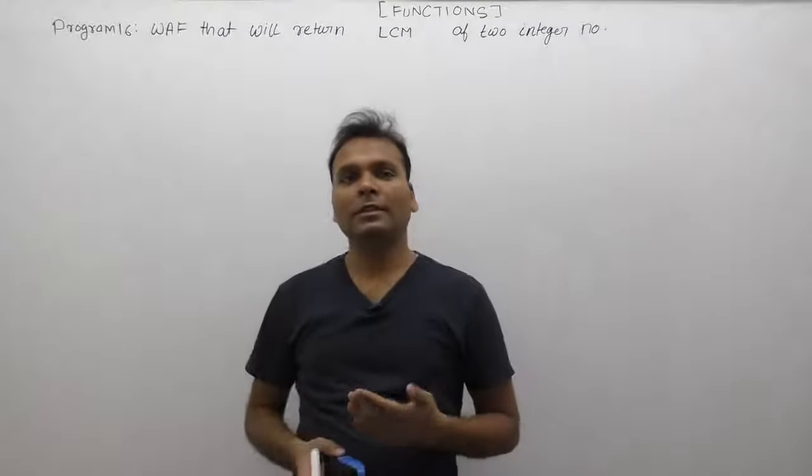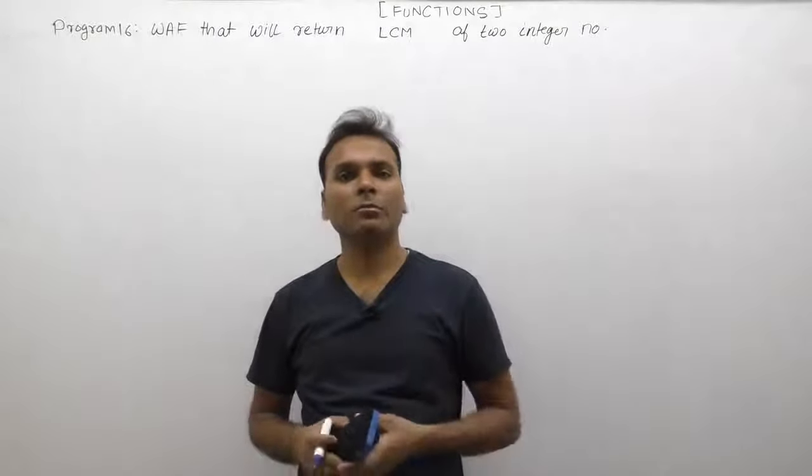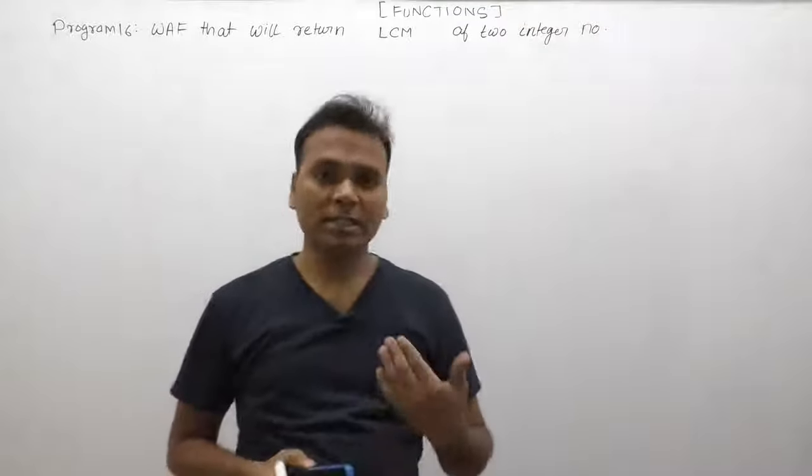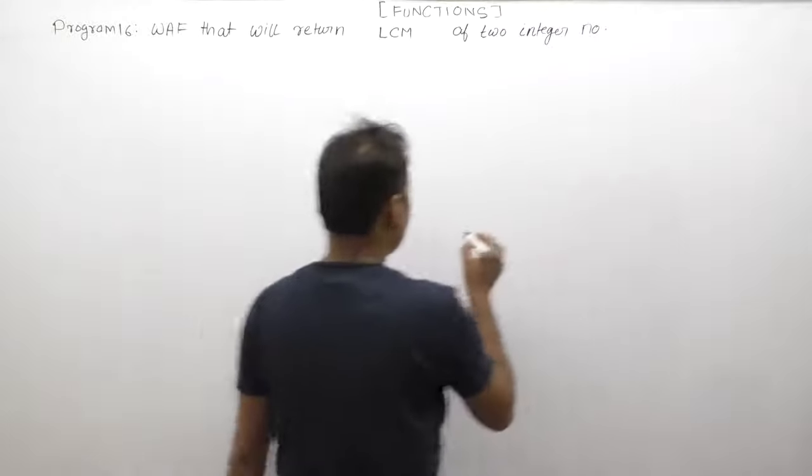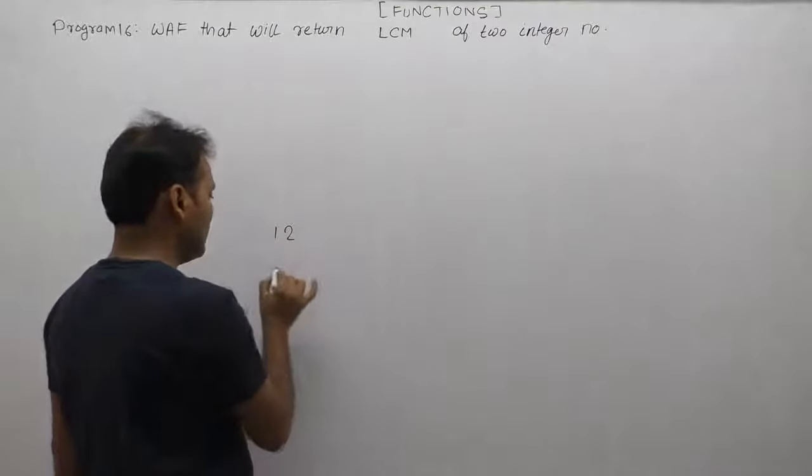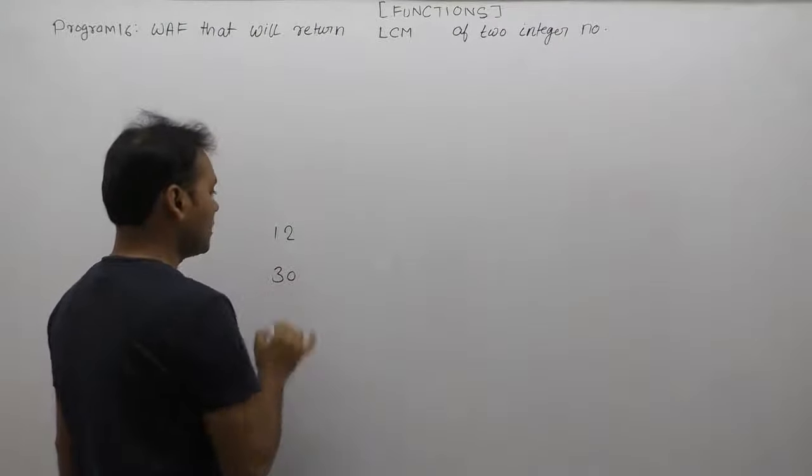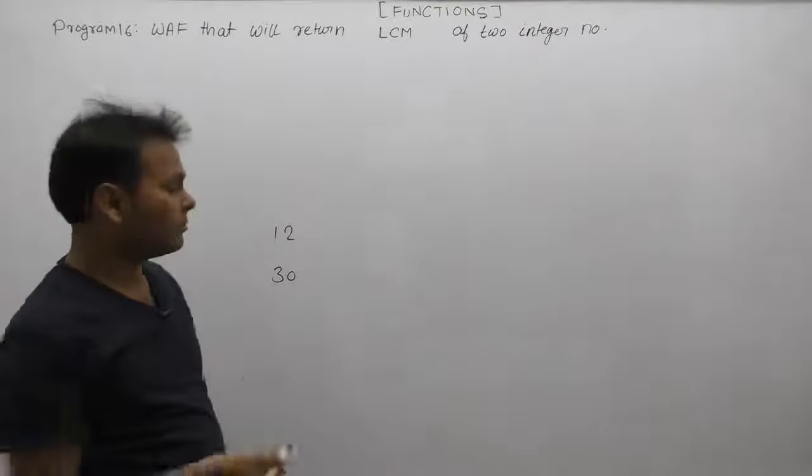Now we're creating C functions that will calculate LCM of two numbers, same as we already discussed during loops. Suppose we have two numbers like 12 and 30, and we want to calculate the LCM of 12 and 30.